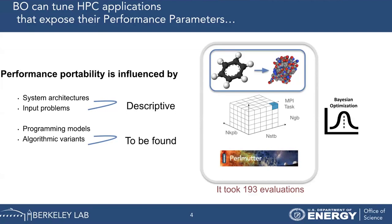We can use Bayesian optimization for HPC tuning on a given platform. There are two types of performance parameters: the ones that describe the search context — for example, how many computing nodes are available — and the ones that must be optimized, such as the MPI configuration that minimizes runtime. We can describe any HPC tuning case in terms of these parameters, run the search, and get optimal values for a given supercomputer.